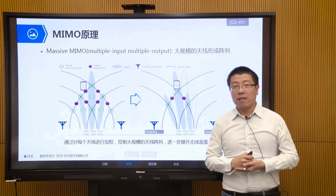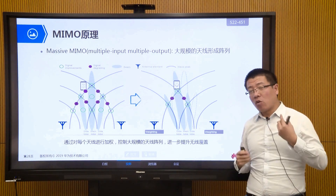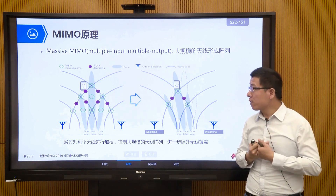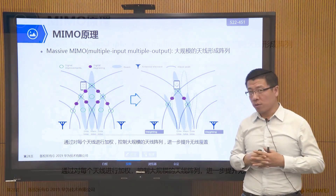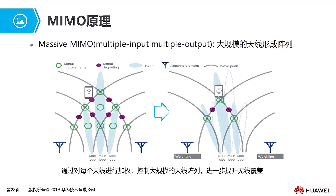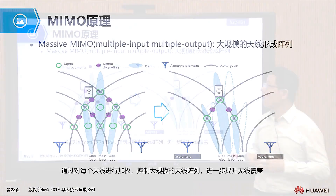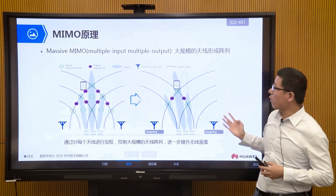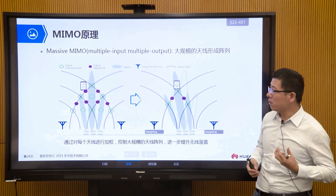Another key technology that enhances our speed is MIMO. This is also what we mentioned yesterday. It's a multi-antenna technology. In the 5G era, we call it massive MIMO — a large-scale multi-antenna technology. It is through this large-scale antenna array that we form beam shaping to achieve such a gain.